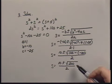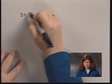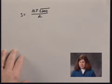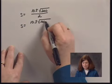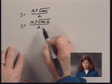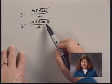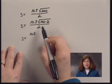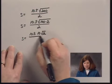I can simplify further because I can simplify the square root of 200. I have S equals 10 plus or minus the square root of 200, over 2. Since 200 is 100 times 2, I write 10 plus or minus the square root of 100 times 2, over 2. The square root of 100 is 10, so I write S equals 10 plus or minus 10 times the square root of 2, all over 2.